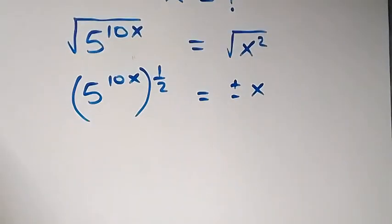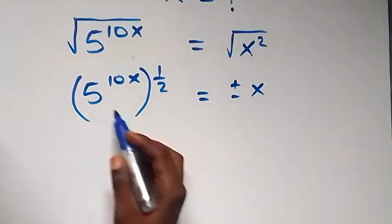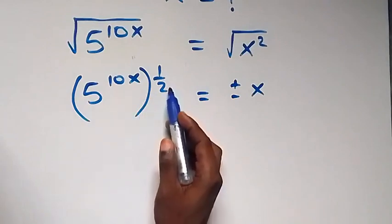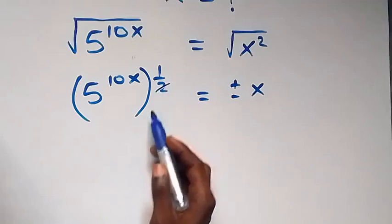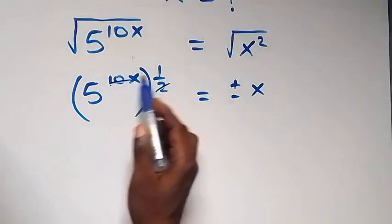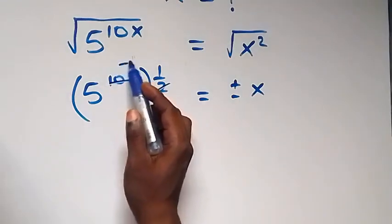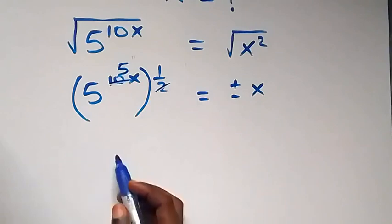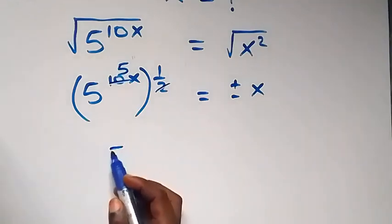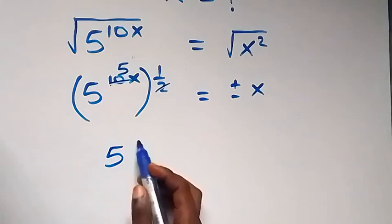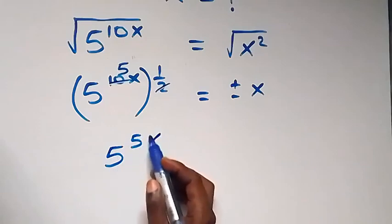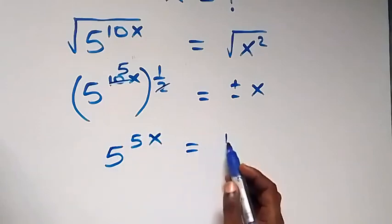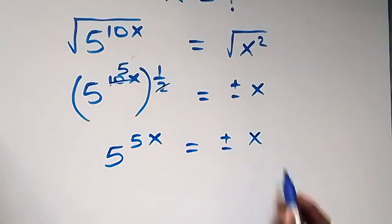Then from here, when this power multiplies by the law of indices — here we have 2 times 1, 2 times 5, that's 5x steps — this gives us 5 raised to power 5x now equals to plus or minus x.